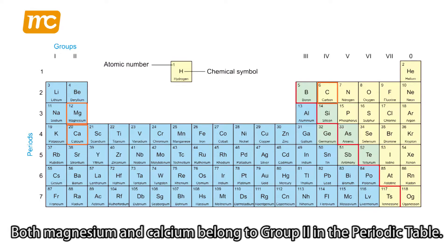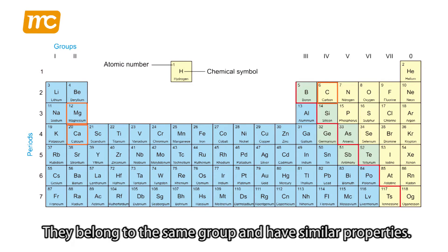Both magnesium and calcium belong to group 2 in the periodic table. They belong to the same group and have similar properties.